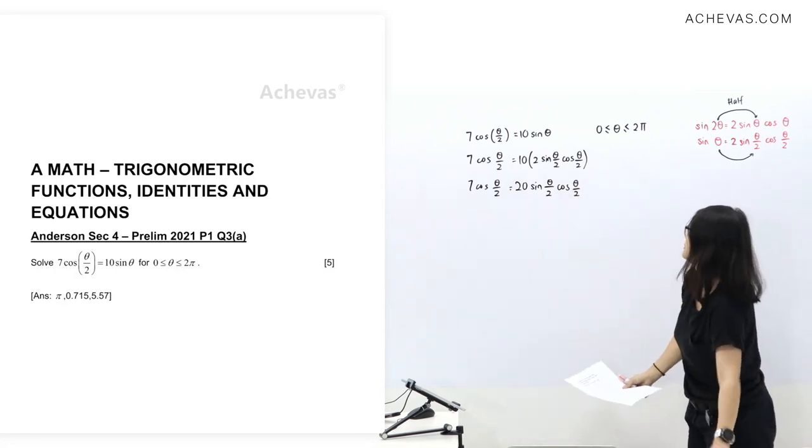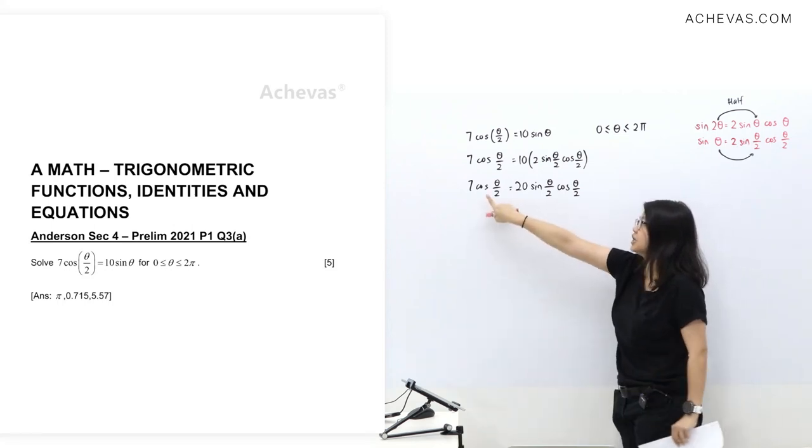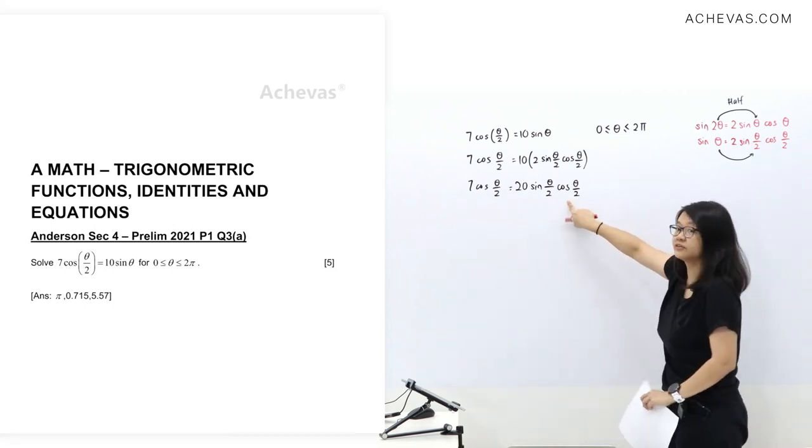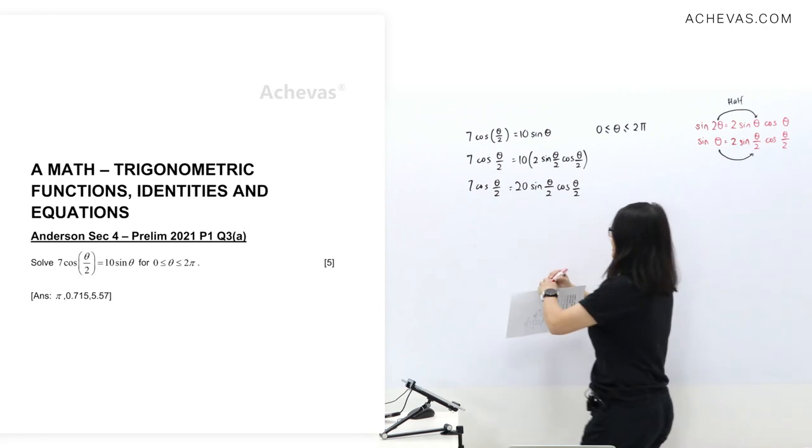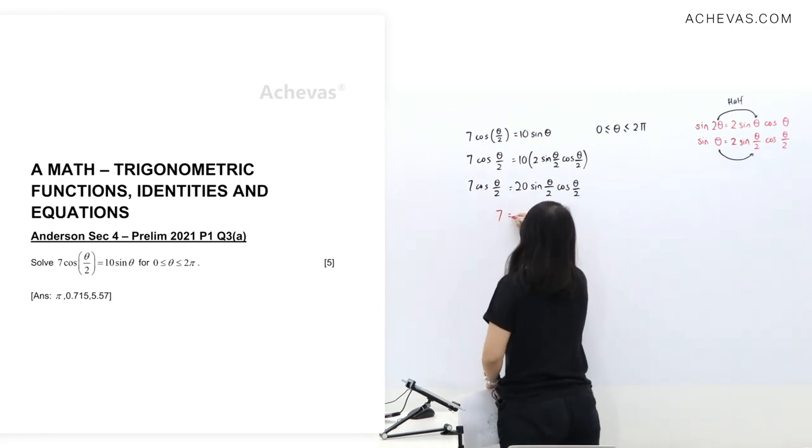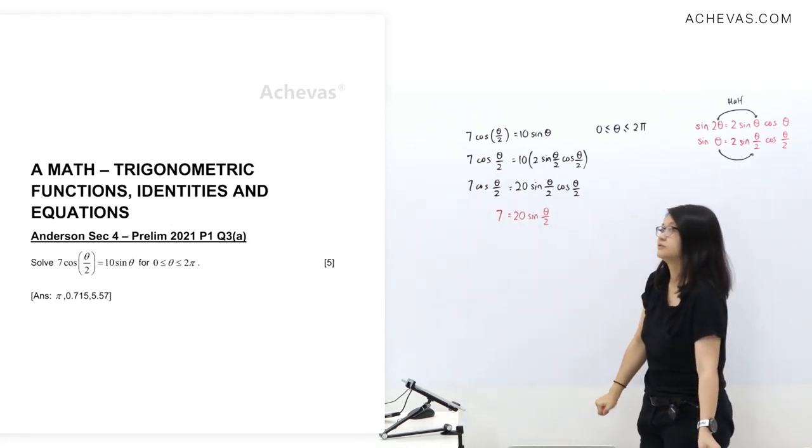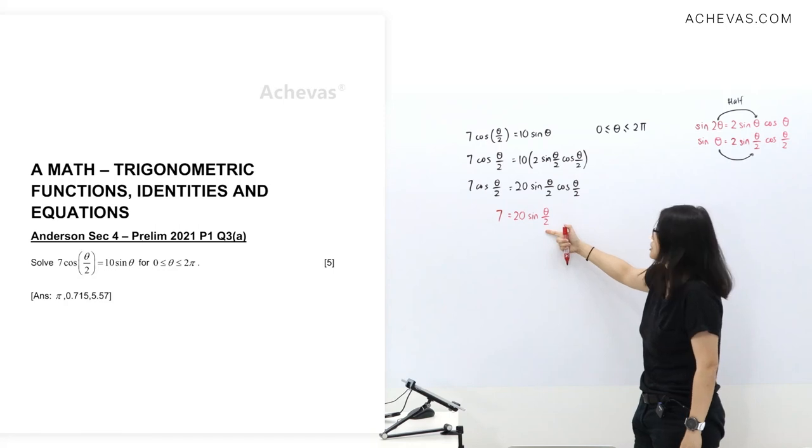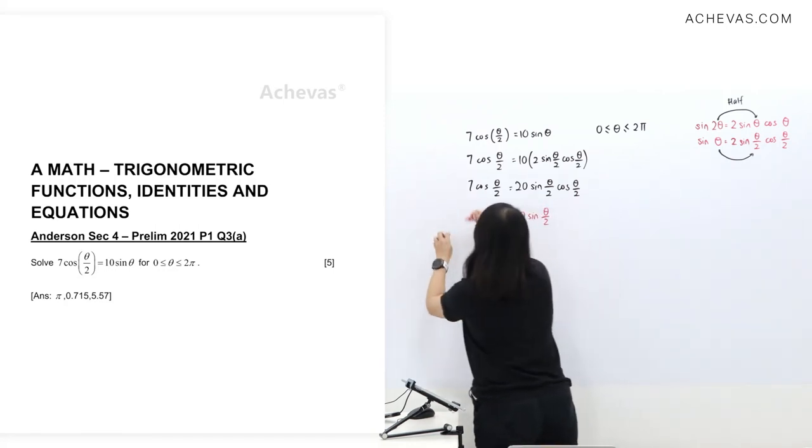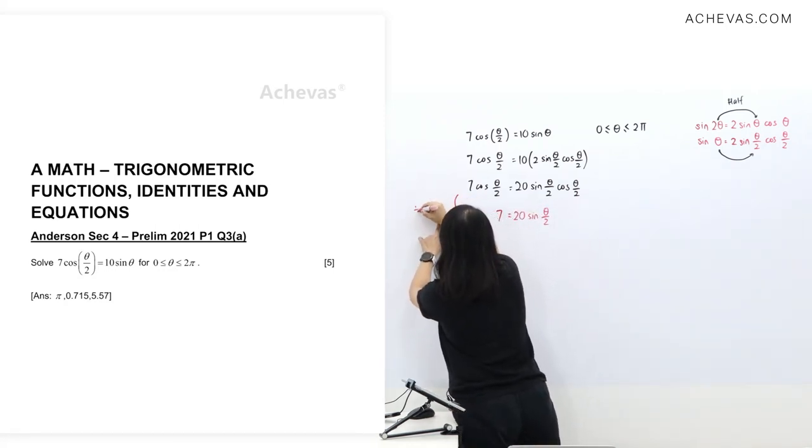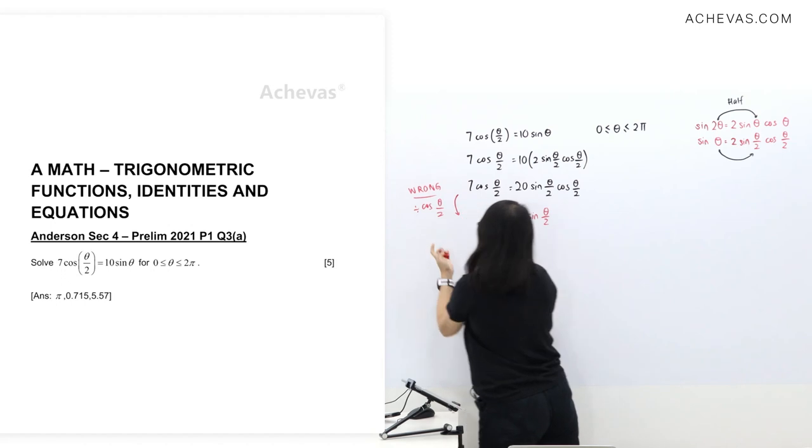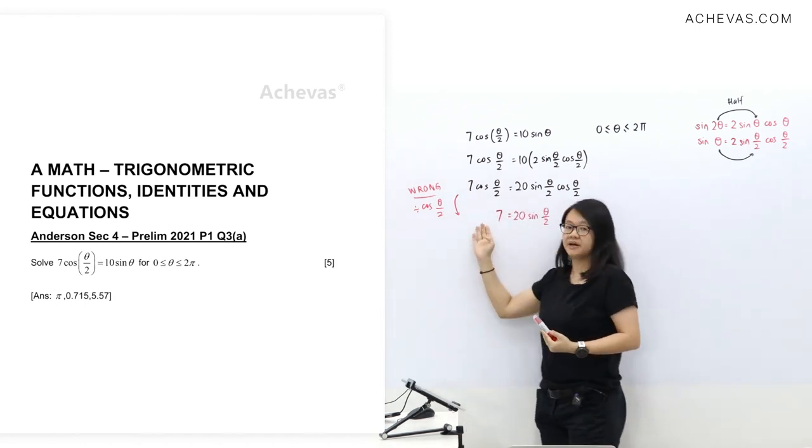So we look at this. A lot of people feel very happy because they see cos theta over 2, cos theta over 2. What they do next step will be, hey, let's divide cos theta over 2. Well, you've got to be very careful in this step. Because what you are doing is dividing by cos theta over 2.